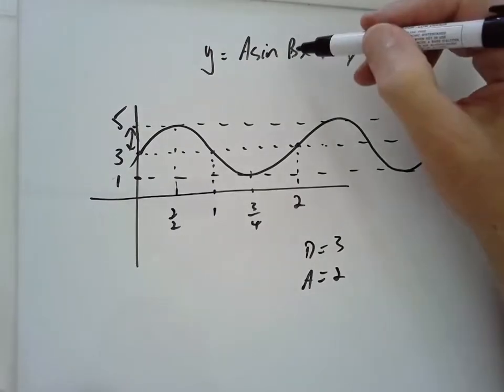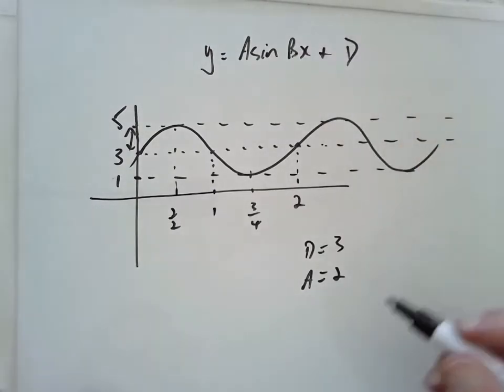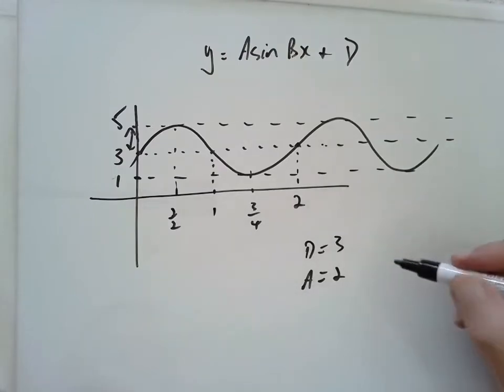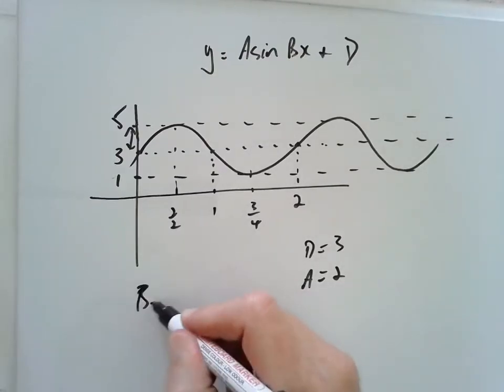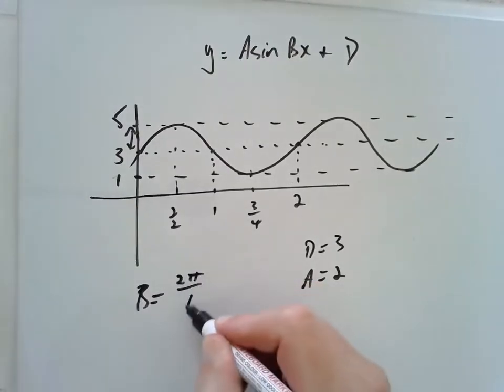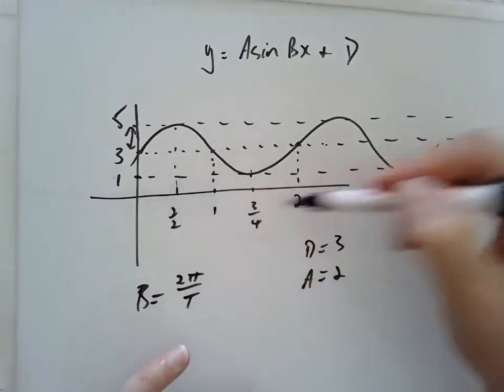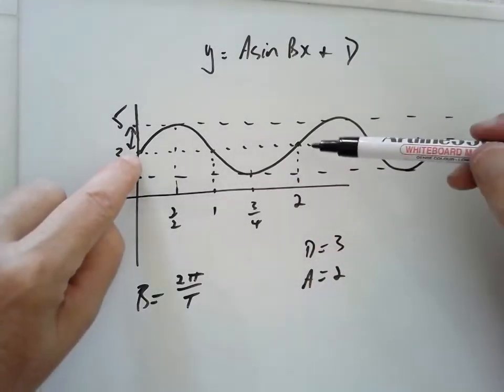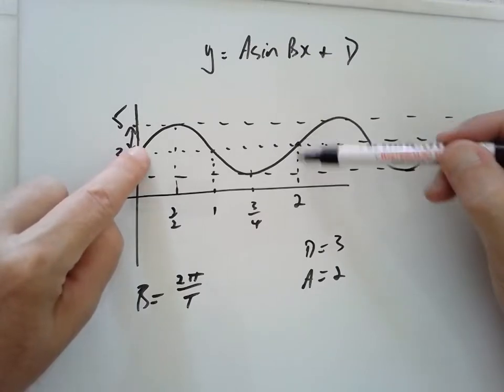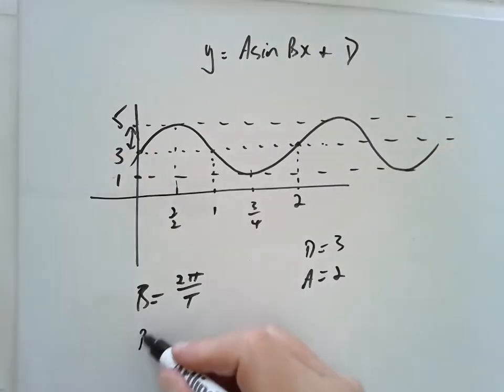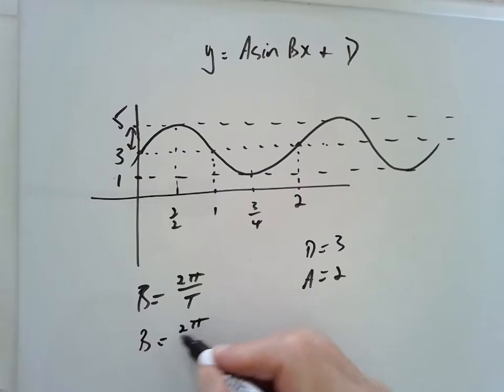And we're going to use a rule here, b equals 2π on t. Now t is my time period, so the length it takes to get through a full cycle, which here is 2. So here I'm going to go b equals 2π on 2, which is π.